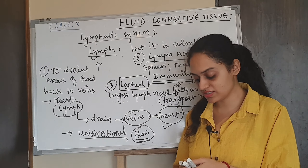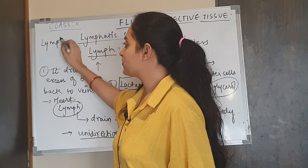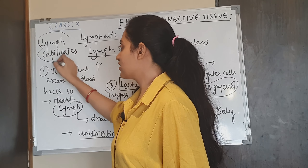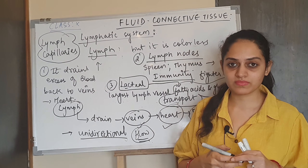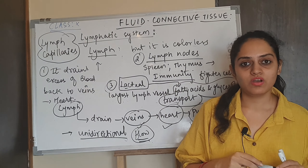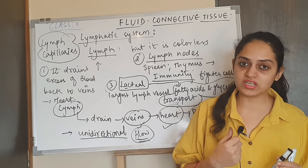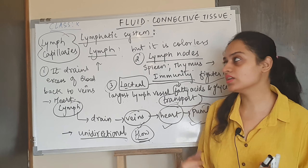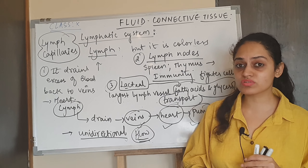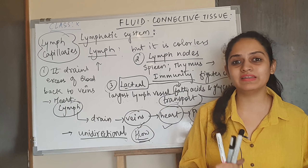We have now seen the lymphatic system, including lymph nodes and lymph capillaries, which help drain and absorb fluid. This completes our study of fluid connective tissue — blood and lymph — where blood is part of the circulatory system and lymph is part of the lymphatic system. In the next lecture, we are going to see dense and fibrous connective tissue, in which we will study ligaments and tendons.